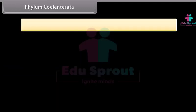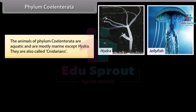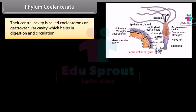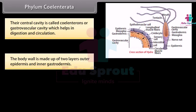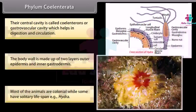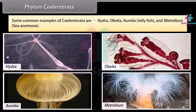Phylum Coelentrata is derived from Greek words: koilos, meaning hollow, plus enteron, meaning gut. The animals of Phylum Coelentrata are aquatic and mostly marine except Hydra. They are also called cnidarians. They are multicellular, diploblastic, and radially symmetrical. Their central cavity is called coelenteron or gastrovascular cavity, which helps in digestion and circulation. The body wall is made up of two layers: outer epidermis and inner gastrodermis. Most animals are colonial while some, like Hydra, have a solitary lifespan. Common examples are Hydra, Obelia, Aurelia, jellyfish, and Metridium (sea anemone).